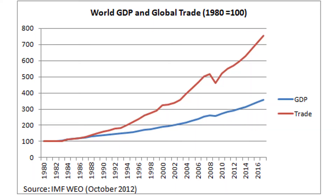This chart here shows us the increase of GDP around the world and the increase in the value of trade around the world, both presented as an index with a base year of 1980. We can see that by 2016, while global output has gone up maybe three and a half times from what it was in 1980, the amount of stuff being traded around the world has gone up by nearly seven and a half times.